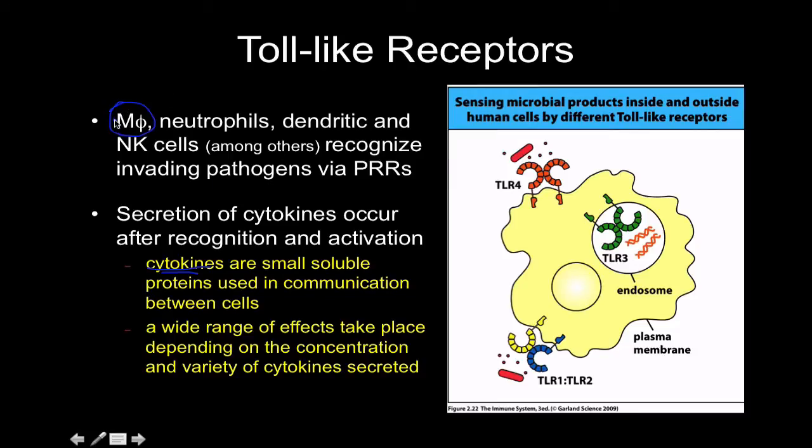There's a specific type of macrophage for each tissue — it stays there, bound to that location. There's a specific one for the skin, a specific one for the liver, and a specific one for the respiratory tract. These macrophages are the front lines: they're the first to encounter the pathogen, and they're the ones that secrete cytokines to recruit other immune cells to the site of infection to fight it off.